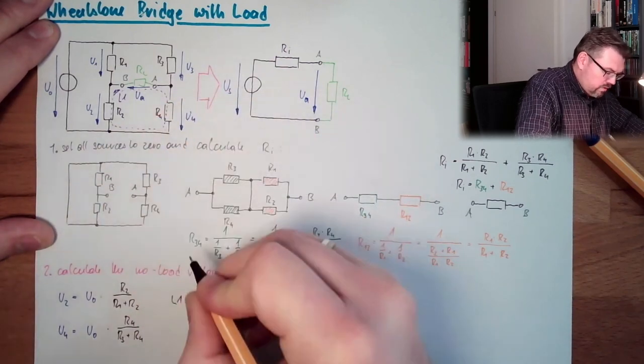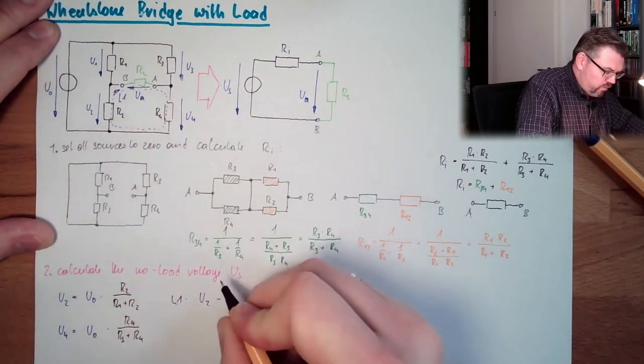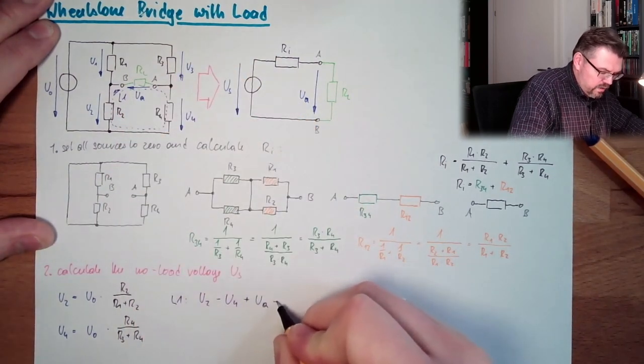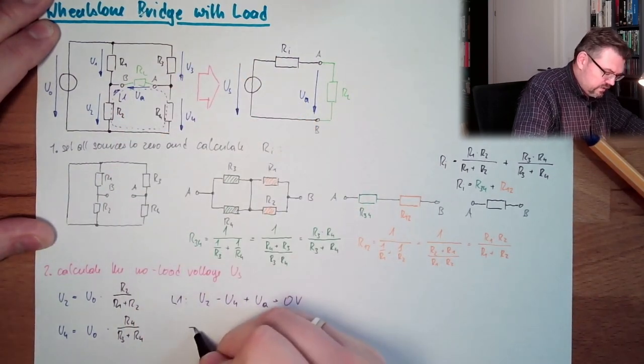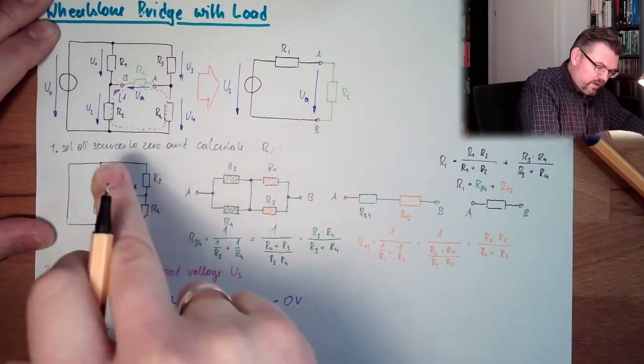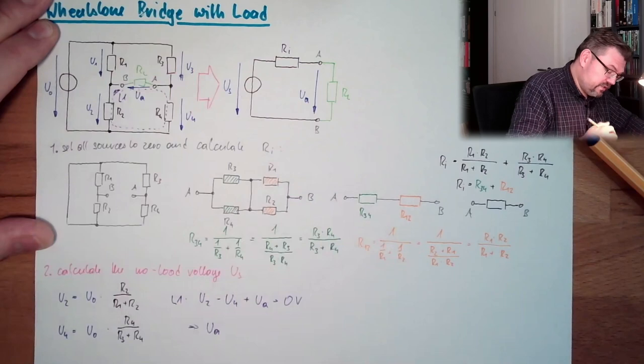U2 minus U4 plus Ua equals zero volts. This means Ua, which is then already the no-load voltage because there is no resistance inside.